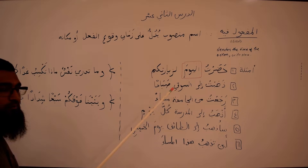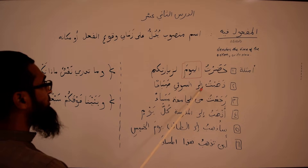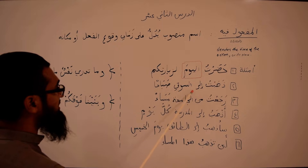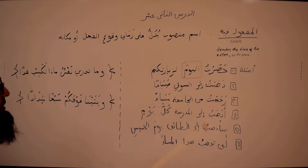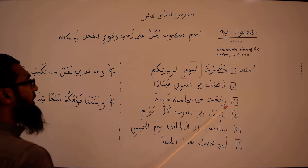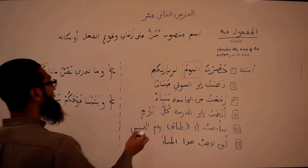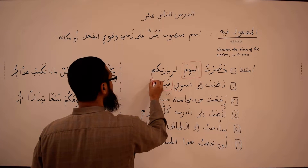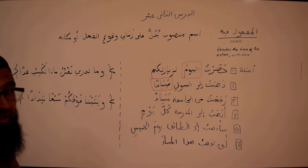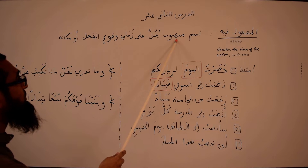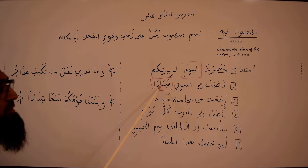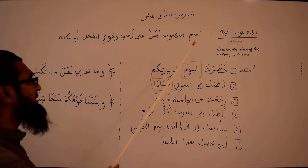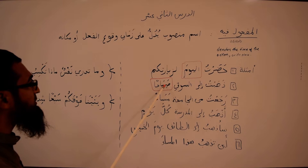لِزِيَارَتِكُمْ is telling you about the reason. Second example: ذَهَبْتُ إِلَى السُّوقِ صَبَاحًا — I went to the marketplace in the morning. صَبَاحًا is the مفعول فيه. Notice it is mansoob and it is indicating the time of the action — not the place, just the time: this morning, or in the morning.